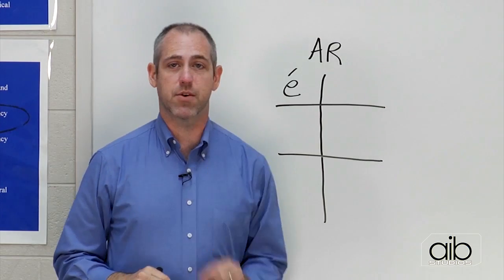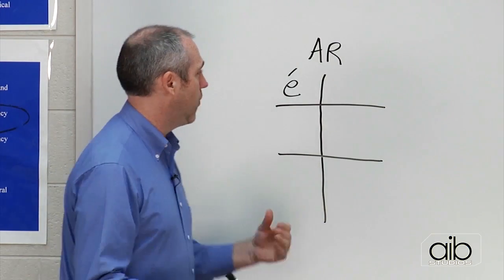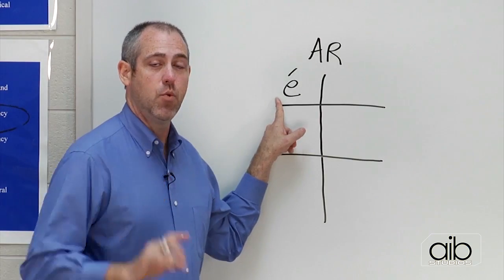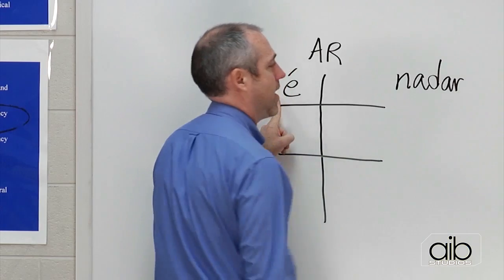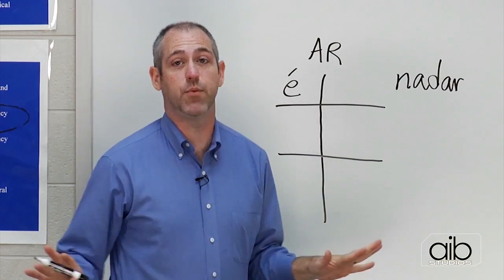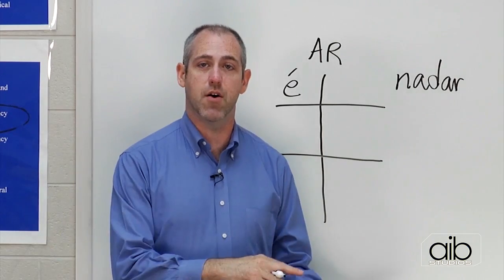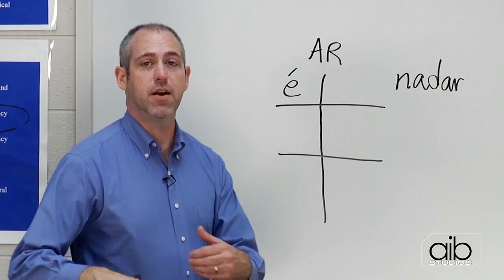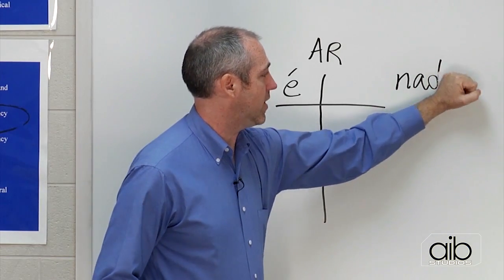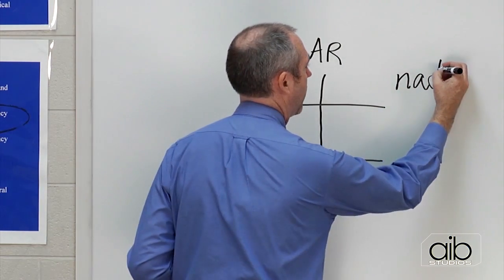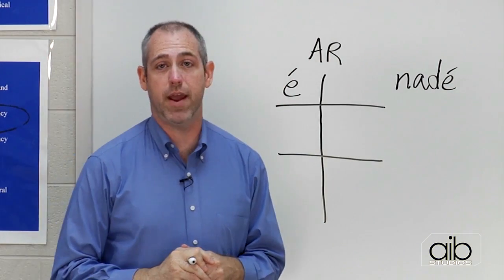So if I wanted to say, I swam, you remember the verb nadar we've talked about in previous episode. We could say, I swam would be YO nadé. We're going to do the same thing. Say, for example, we've got the verb nadar. We're going to do the same thing we've always done. Take off that AR. If it's an ER verb, we're going to take off the ER. If it's an IR, we're going to take off the IR. So we take off that AR right there. And then we put the appropriate ending. So what we have is YO nadé, for I swam.